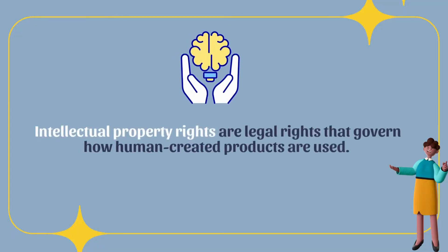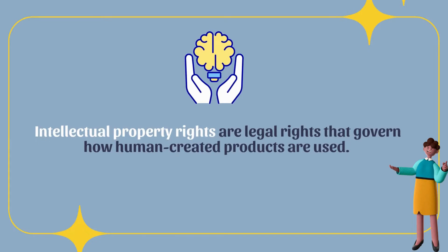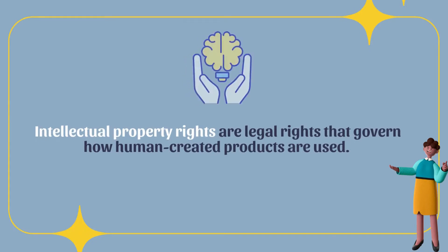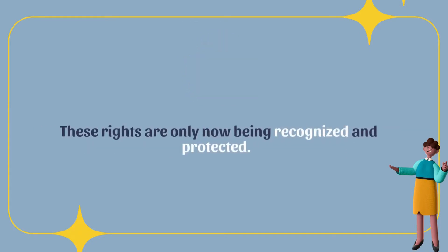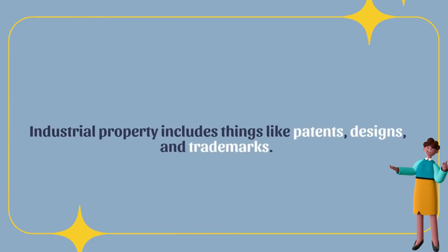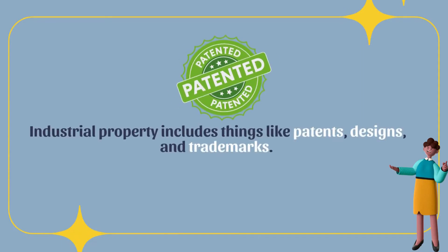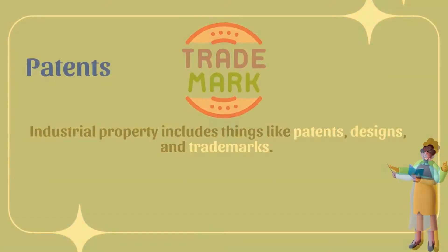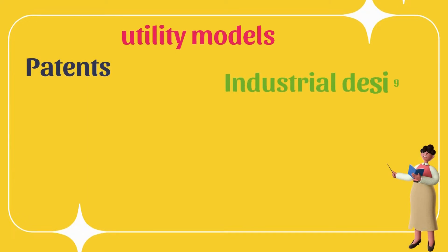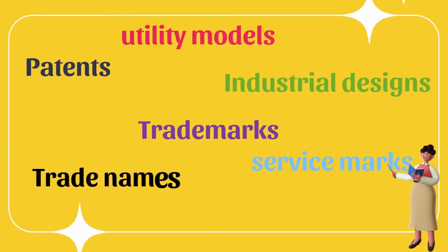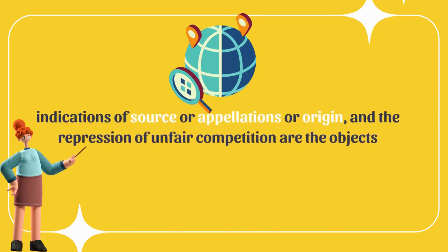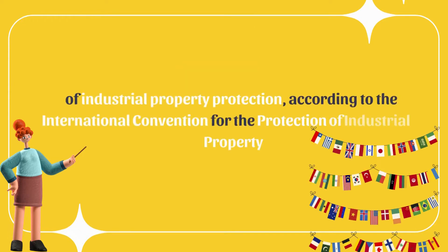Intellectual property rights are legal rights that govern how human-created products are used. Industrial property includes things like patents, designs, and trademarks. Patents, utility models, industrial designs, trademarks, service marks, trade names, indications of source or appellations of origin, and the repression of unfair competition are the objects of industrial property protection.